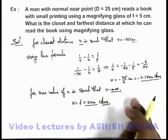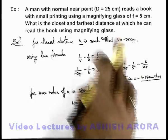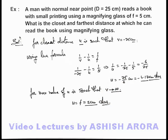And this is the minimum distance up to which the letters are readable with maximum strain on eye, so that the image will be produced at near point.